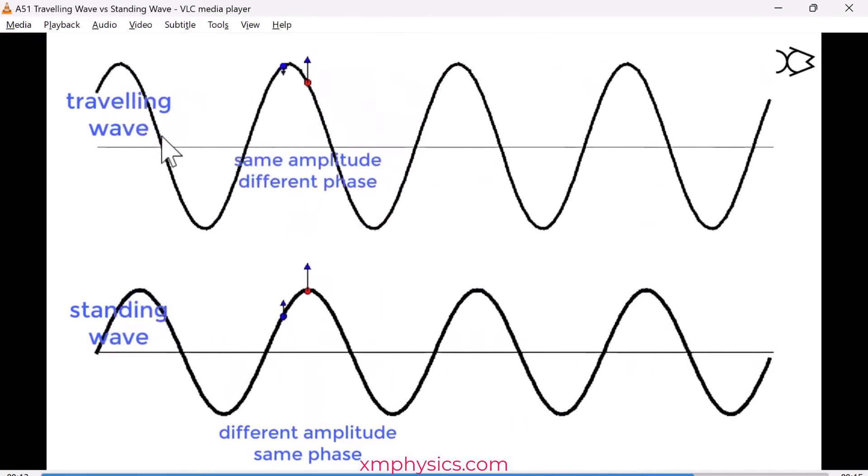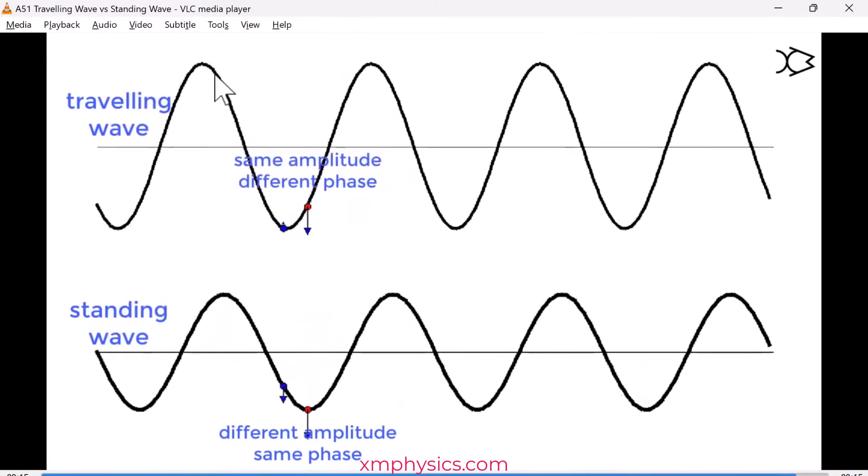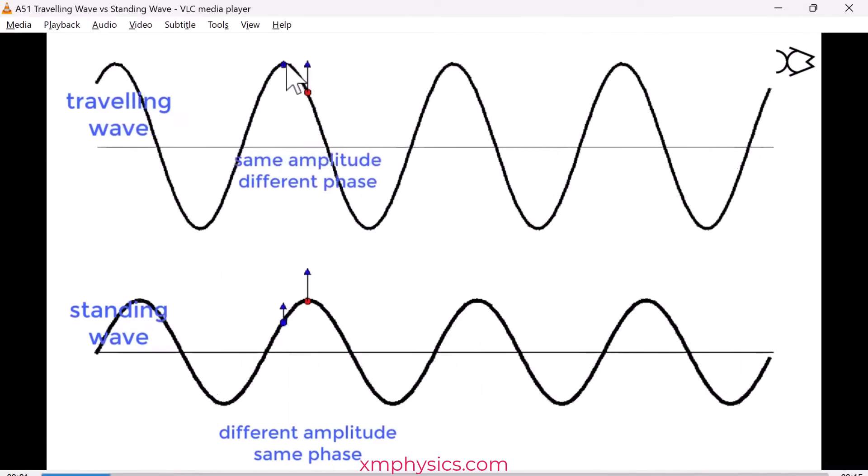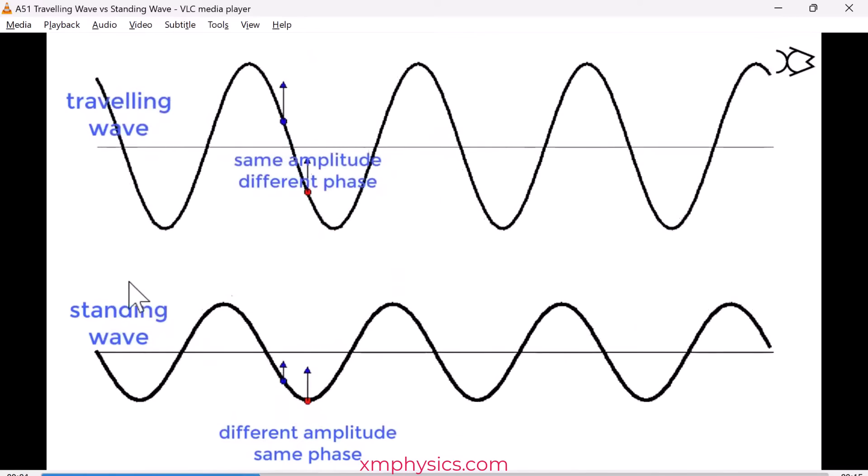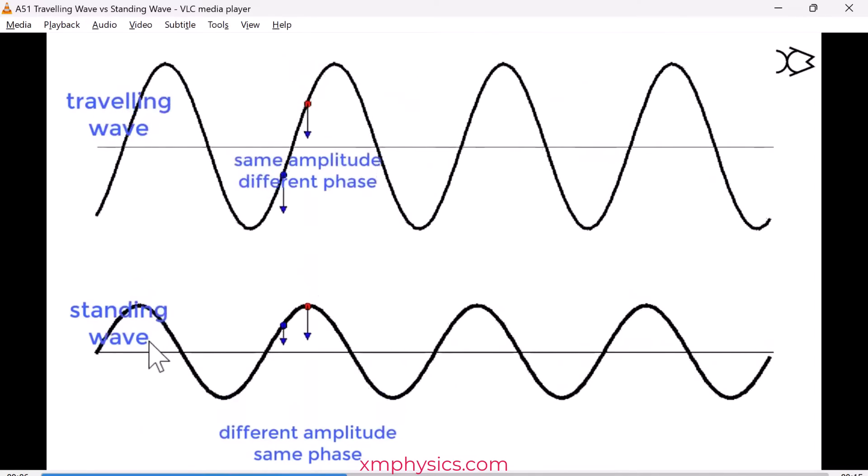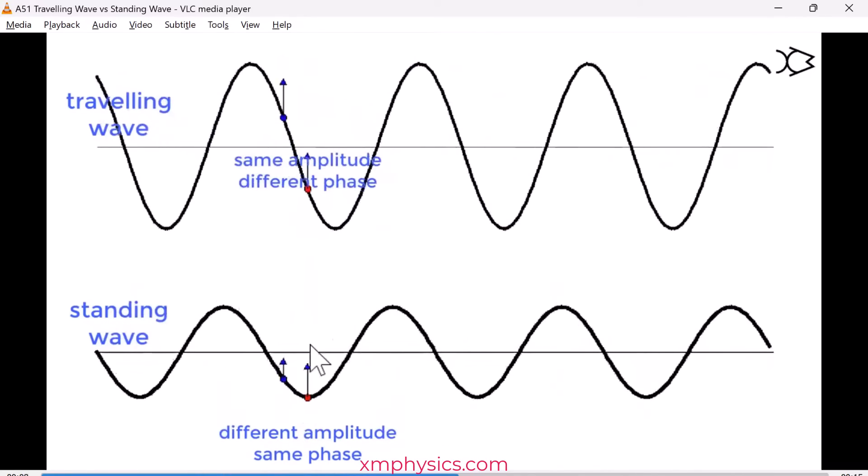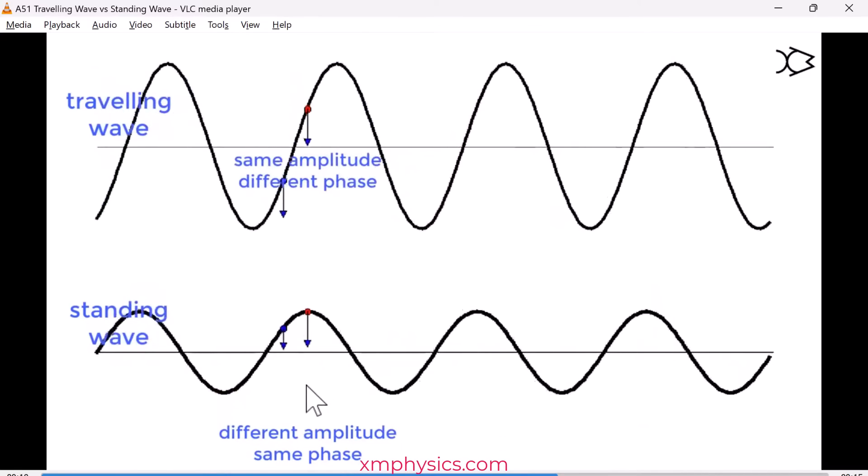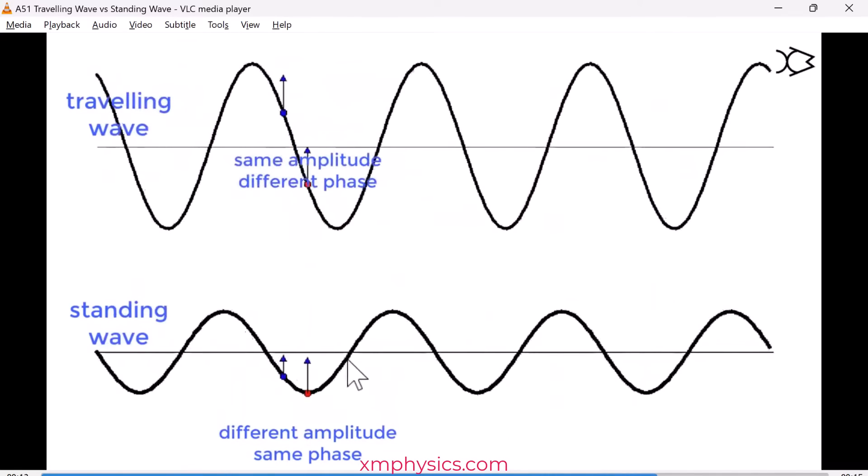The traveling wave, as the name suggests, travels. You can see a wave crest progressing rightward. The standing wave, as its name suggests, is stationary. It doesn't move. You can see kind of up and down bobbing motion, but certainly nothing is moving leftward or rightward.